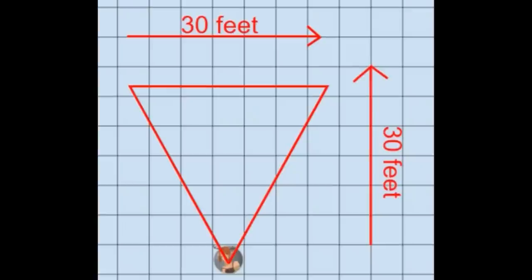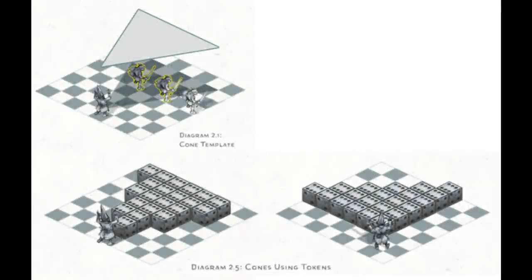And that is the limit of what the player's handbook tells us about cones. Though we should also remember the assumption in the player's handbook is you aren't playing on a grid. So, how cones should be used on a grid gets a lot more attention in Xanathar's Guide to Everything. In that sourcebook, we are given two methods for dealing with spell shapes on a grid. The template method and the token method. So, let's go through both of those.